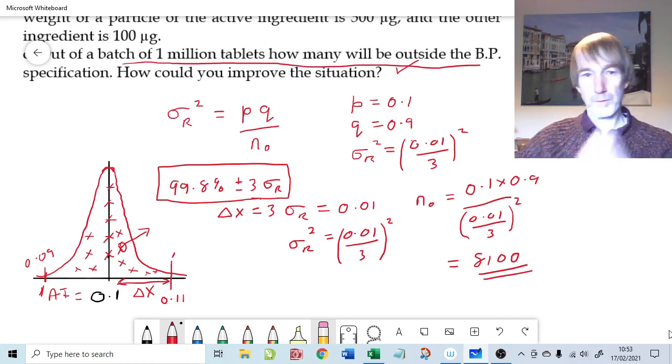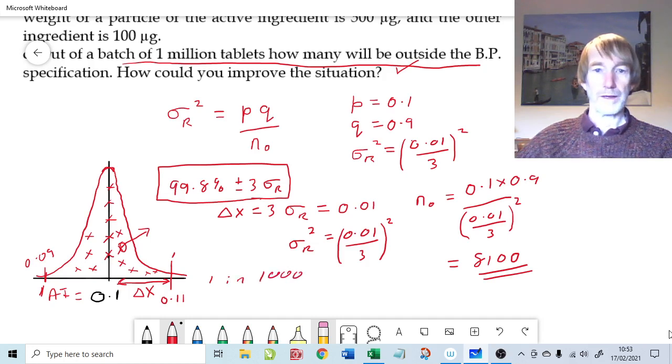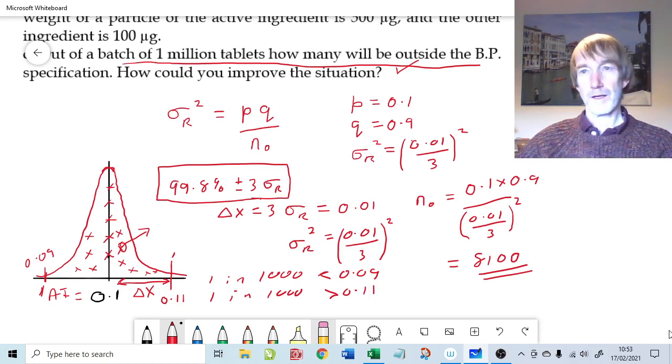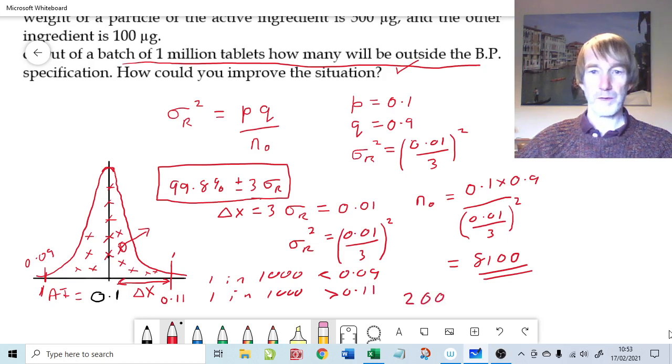If we're saying 99.8%, and we deliberately went to an even number to make life easier, then one in a thousand will be less than 0.09, and one in a thousand will be greater than 0.11. In other words, two in a thousand are out of spec, and two in a thousand is going to give us two times a thousand out of spec particles in one million.